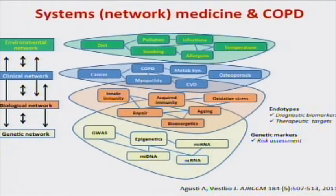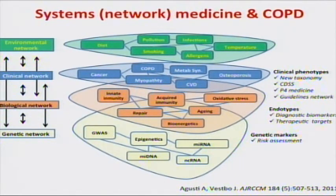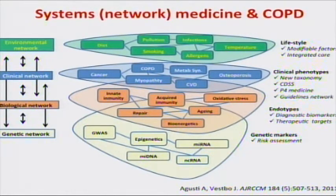The genetic basement has the potential to identify genetic markers for risk assessment. The biological network will identify biomarkers for diagnosis or response to treatment, and for the pharmaceutical industry, new targets. This will eventually end up in a new taxonomy, a new classification of disease. I think we should stop talking about asthma and COPD and talk about airway disease with different characteristics — clinical decision support systems, P4 medicine, guidelines networks — and, of course, modifying lifestyle factors and integrating it. Approaching a complex disease from this perspective has great potential.